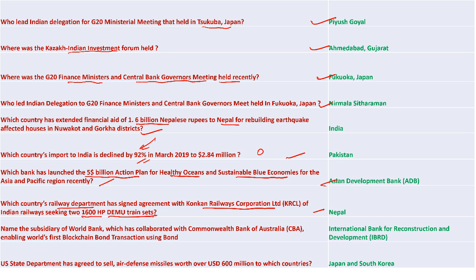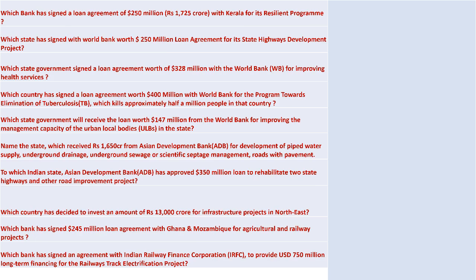Nepal's railway department signed an agreement with Konkan Railways Corporation to seek two 1,600 horsepower demo train sets. The International Bank for Reconstruction and Development, a subsidiary of the World Bank, collaborated with the Commonwealth Bank of Australia enabling a world-first blockchain bond transaction. The US State Department agreed to sell defense missiles worth 600 million dollars to Japan and South Korea because of the threat posed by North Korea.